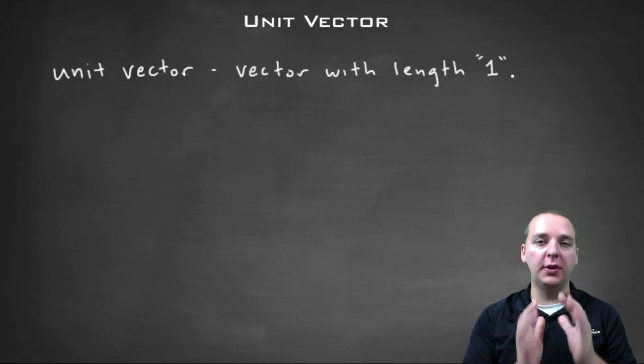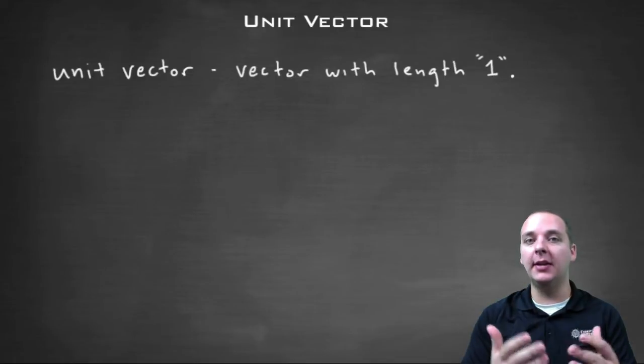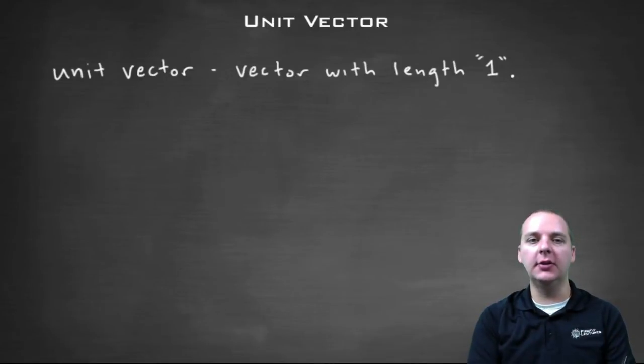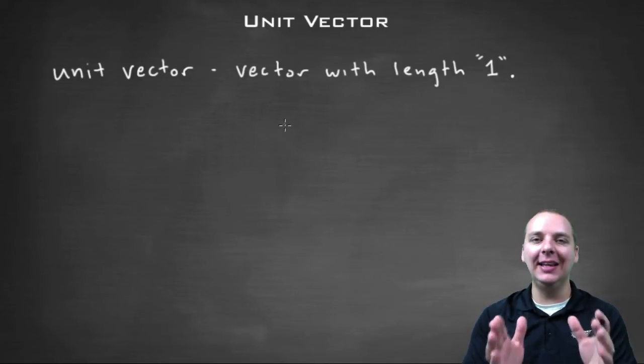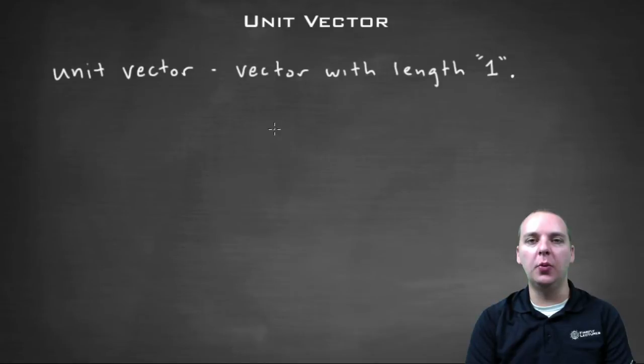When you're talking about vectors, one particular type of vector that's especially important that we see in a lot of different applications is something called a unit vector. Basically, a unit vector is simply a vector that has a length of one. That's its only criteria. It can point in any direction, but its magnitude has to be the number one.